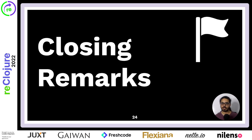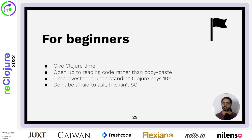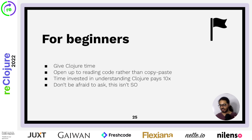So those are my ideas. And now some closing remarks. For beginners, give Clojure time and be more open to the ways of Clojure — for example, reading code instead of copy-pasting from Stack Overflow. I know it can be quick for productivity, but it's a short-term solution which creates a long-term problem. The time invested in understanding Clojure really pays tenfold over a long period of time because it's a beautiful language. And another thing I think beginners should do is not be afraid to ask questions. The community is really welcoming and really helpful. This isn't Stack Overflow — you don't need to formulate your question for 10 days before posting it and then get marked as a duplicate. You'll just be helped.